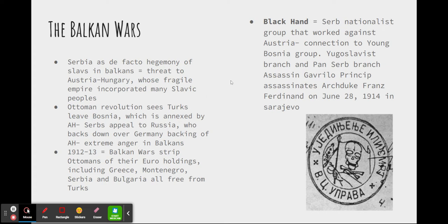No place in Europe had such strong nationalist feelings and extreme resentment and bitterness as the Balkans. Serbia and the Serbian people were seen as the de facto hegemon of the Slavic peoples in the Balkans — they had a lot of power and influence. They hoped to unite the Balkan peoples against both the Austro-Hungarian aggressive neighbor to the west and north, and against the Turks, who had occupied much of this area of Europe since the late medieval period. This made them a threat to Austro-Hungary, whose fragile empire incorporated many Slavic peoples, including the Bosnian peoples.